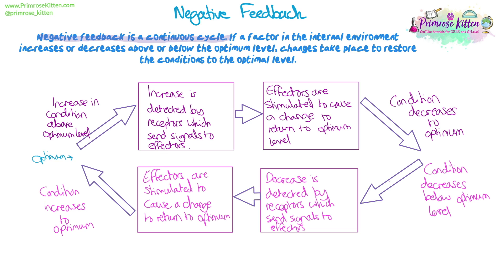This includes all those conditions we talked about: body temperature, water levels in the blood, and blood glucose levels. When we talked about blood glucose levels, if the blood glucose level goes too high, insulin is released by the pancreas to lower it back towards the optimum. If it goes too low, the pancreas detects that, glucagon is released, and the liver breaks down glycogen to release glucose, which increases the blood glucose level back up. So blood glucose is an example of negative feedback in homeostasis.